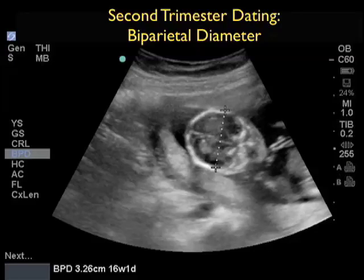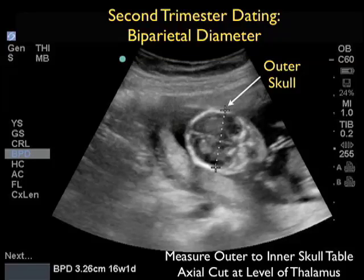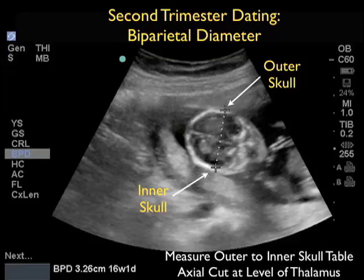In the second trimester, dating of gestational age focuses on skull circumference or measurement of the biparietal diameter. We want to measure the skull at about the level of the thalamus in an axial orientation with the face down. As we can see here, we're placing the calipers from the outer skull table proximally to the inner skull table distally, and we have a measurement of 3.26 centimeters correlating to a 16-week, one-day gestational age.